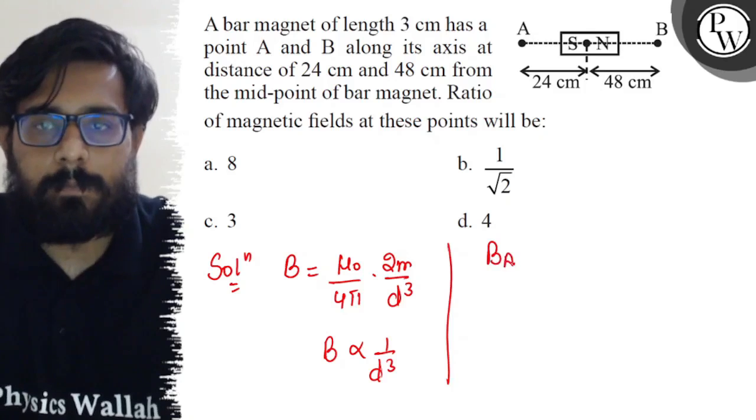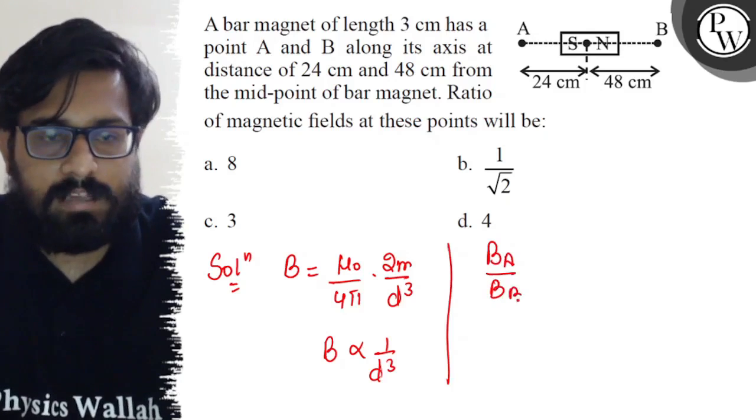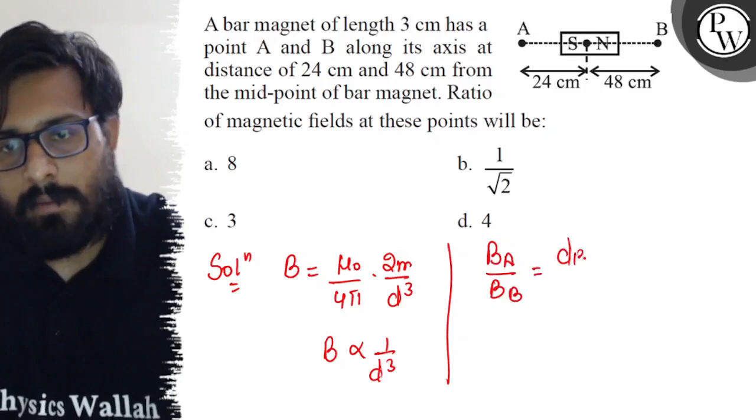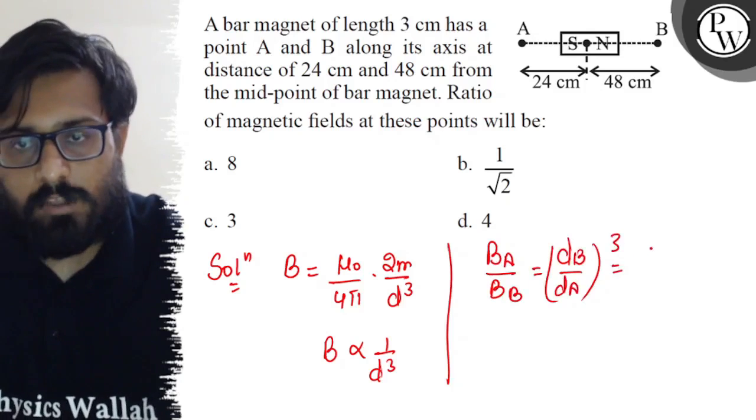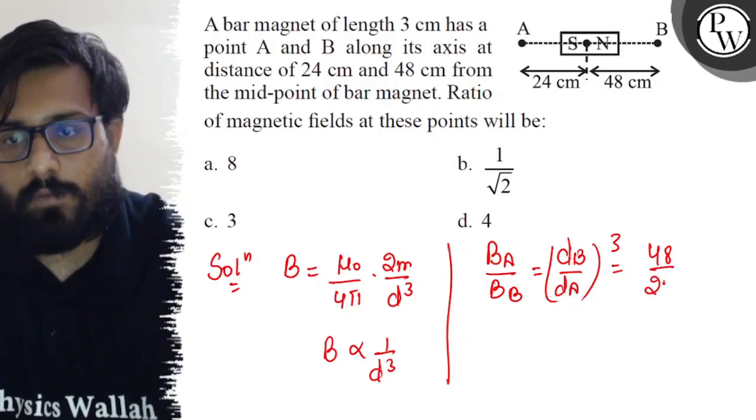So B_A upon B_B, this can be written like this: d_B by d_A whole cube. d_B is 48 and d_A is 24, whole cube.